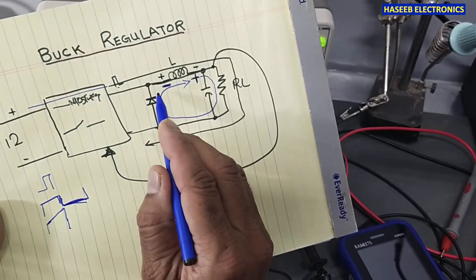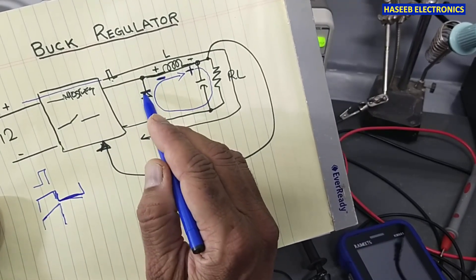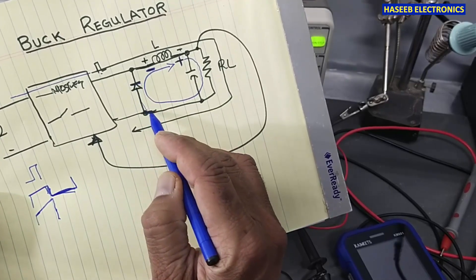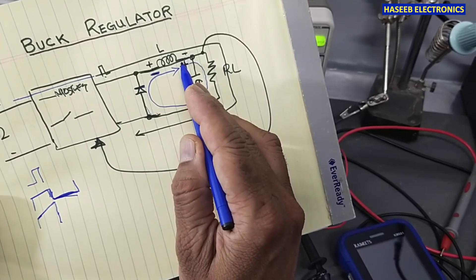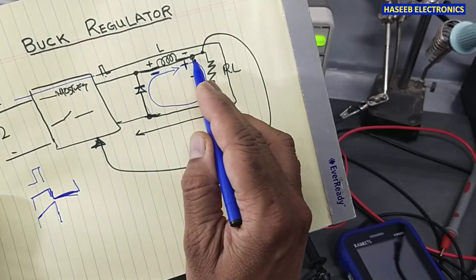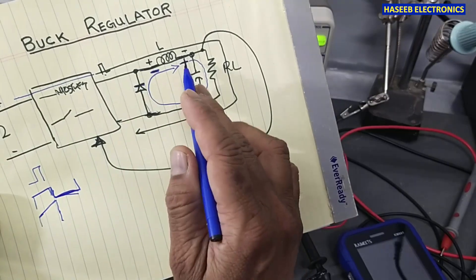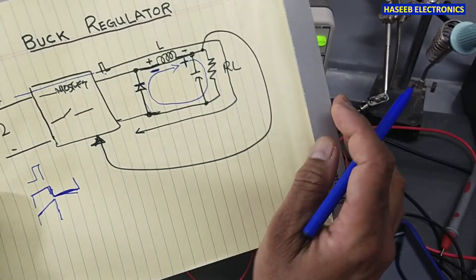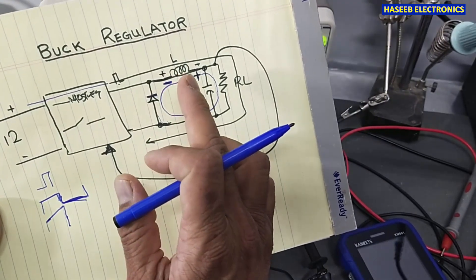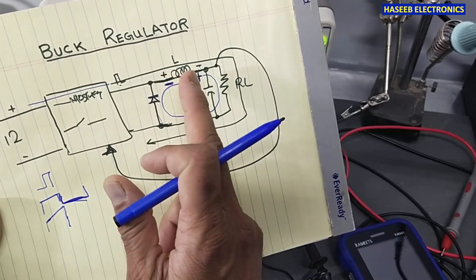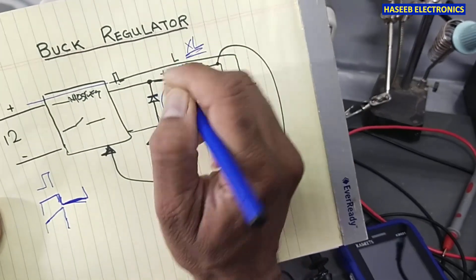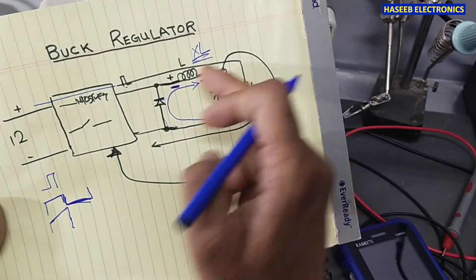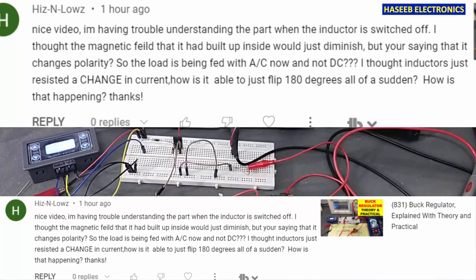In the buck regulator, when we connect a diode, it becomes forward biased, allowing current to flow. The negative end is handled by the diode and the positive is already present, so it provides charging and maintains the same current value in the load. The inductor acts like XL, storing energy and looping it back into the load.